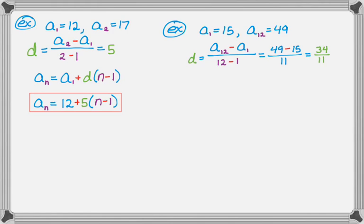We already know the first term, so we can just plug right in and get a sub n is the first term, which is 15, plus the common difference, so 34 over 11, and then the quantity n minus 1, and we're done.